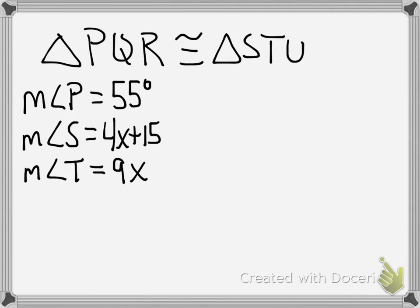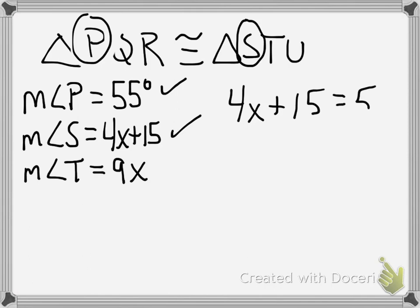If you need to, you can draw a picture. However, if you look and remember that the order of the letters matters, you can see that angle P right here is congruent to angle S. So these two objects right here are congruent to each other, and that means that you can take them and set them equal to each other.